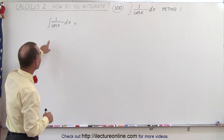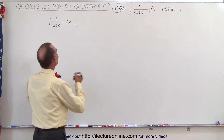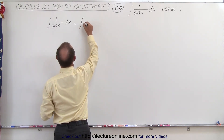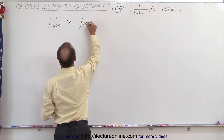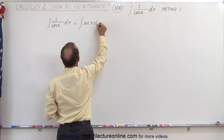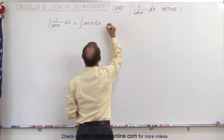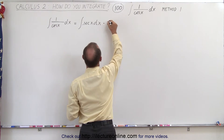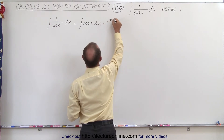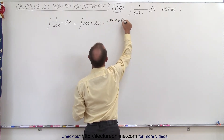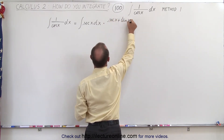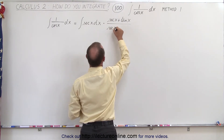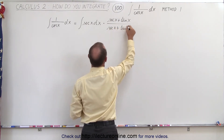The way to integrate this is to first rewrite it as the integral of the secant of x dx, and then we're going to multiply both the numerator and the denominator by the secant of x plus the tangent of x.